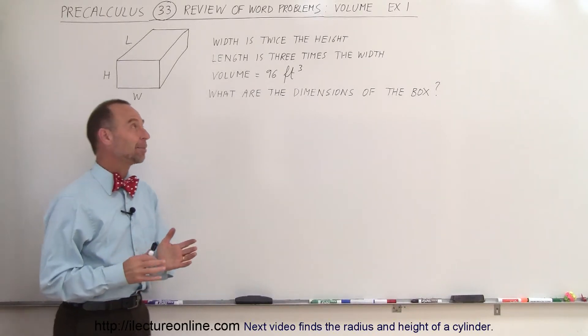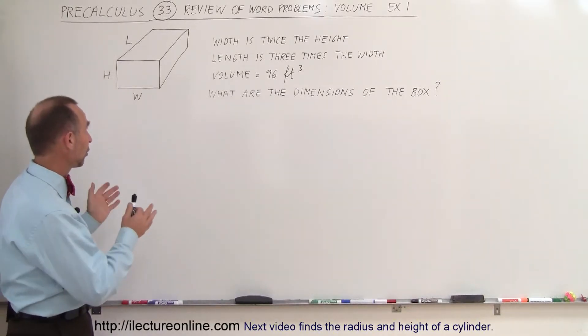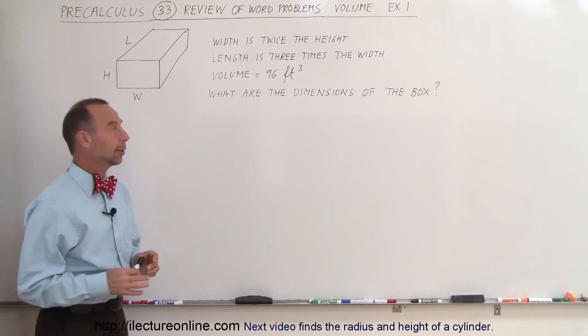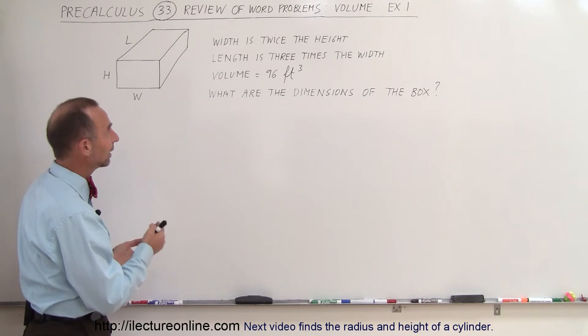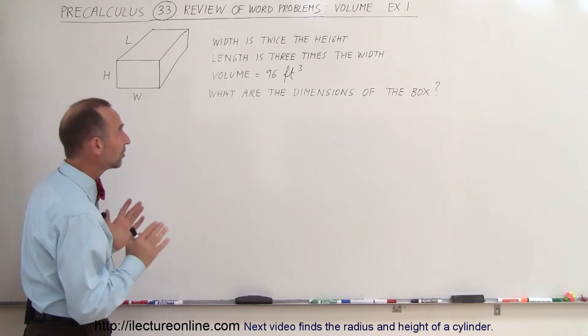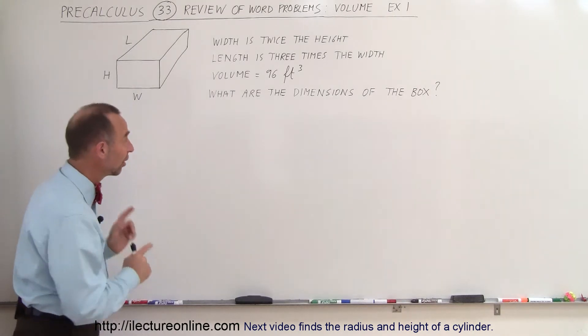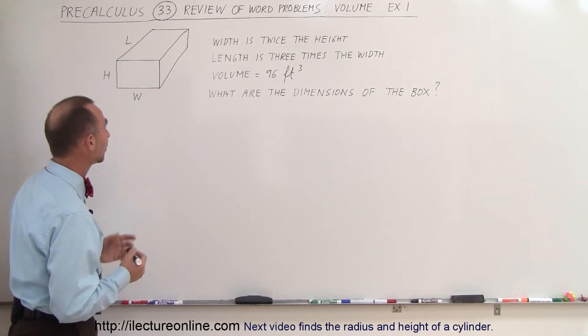Welcome to Electron Online and our next example here deals with volumes. Let's start with the volume of a cube. We're given that the width is twice the height and the length is three times the width, and the volume is 96 cubic feet. What are the dimensions of this box, of this cube?